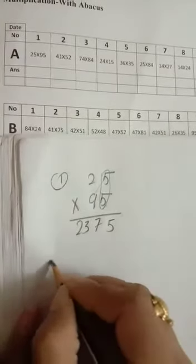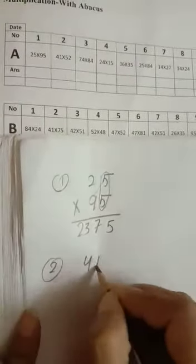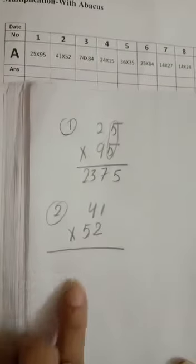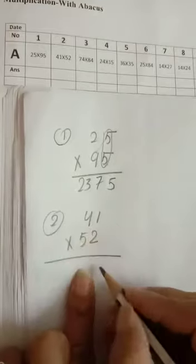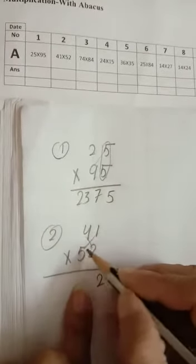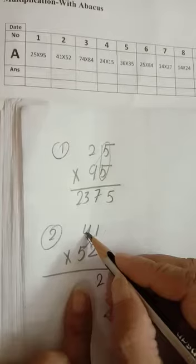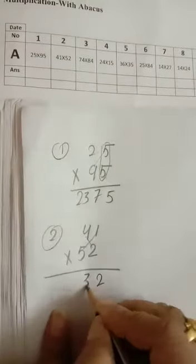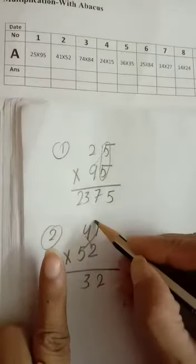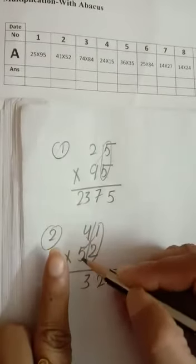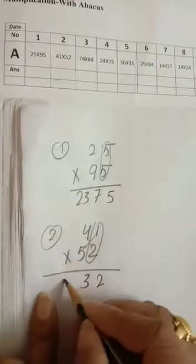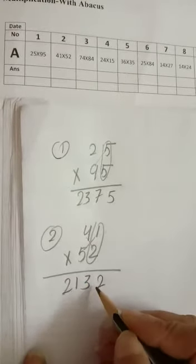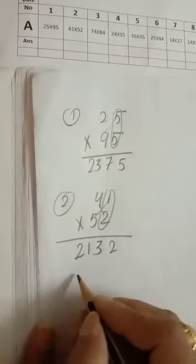Now question number 2: 41×52 multiply. Question number 2. 1×2=2. Now we have to criss cross: 5×1=5 and 4×2=8, 8 plus 5=13, write 3 we have carry 1. So now leave this one row: 5×4=20 plus 1=21. Your answer will be 2132.